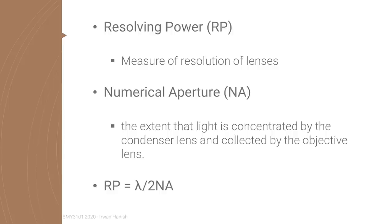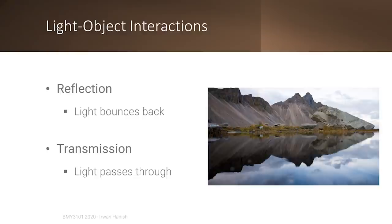Another background principle that helps you understand microscopy is how light interacts with media, especially lenses. The first type of interaction is reflection — when light bounces back off the surface of an object. A beautiful example is when you stand in front of a lake and see a tree or hill reflected by the water; the hill's image and the hill itself look symmetrical because the angle of incidence equals the angle of reflection.